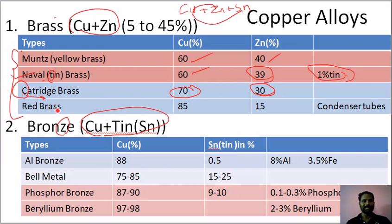Next is red brass. Compared to cartridge brass, it is not 30% — it's 15%. So 15% zinc, remaining copper. That's red brass.